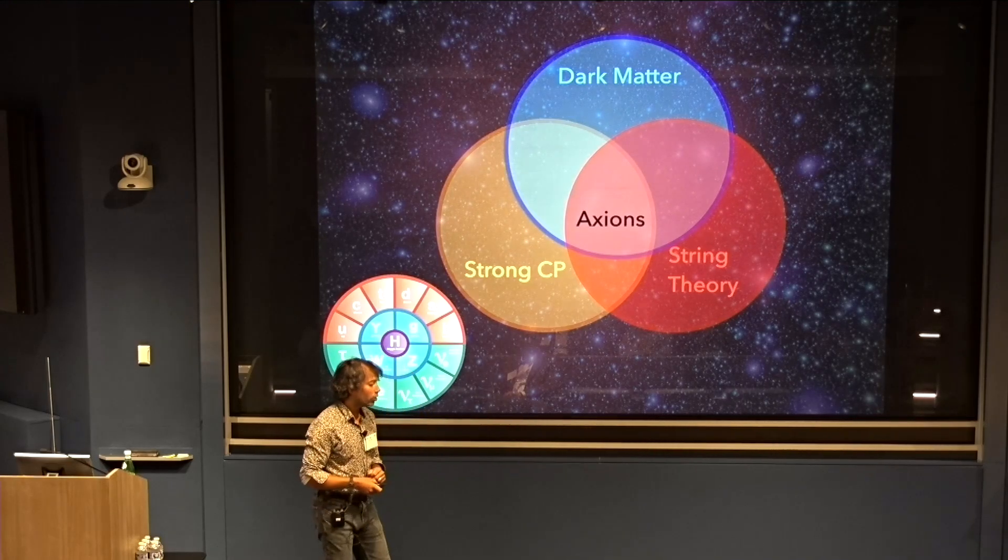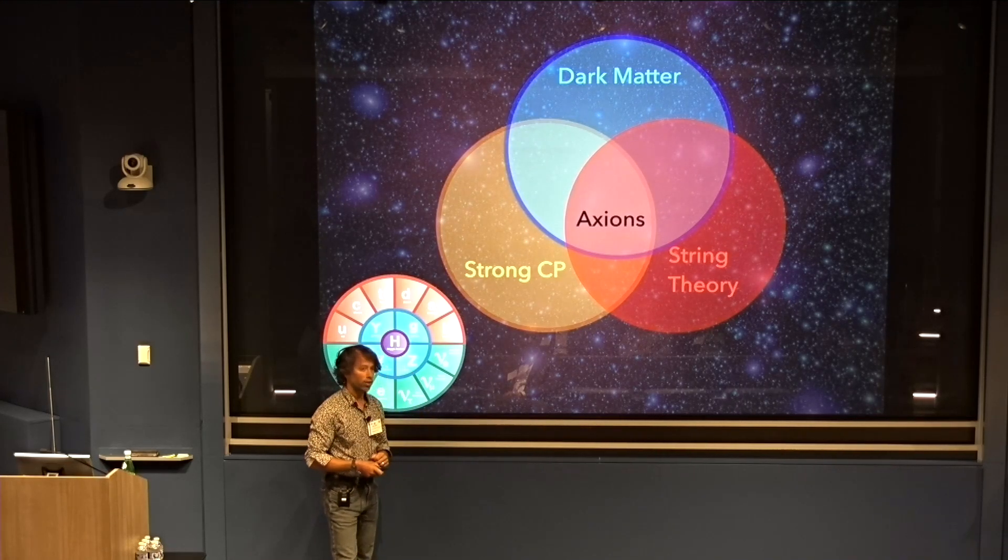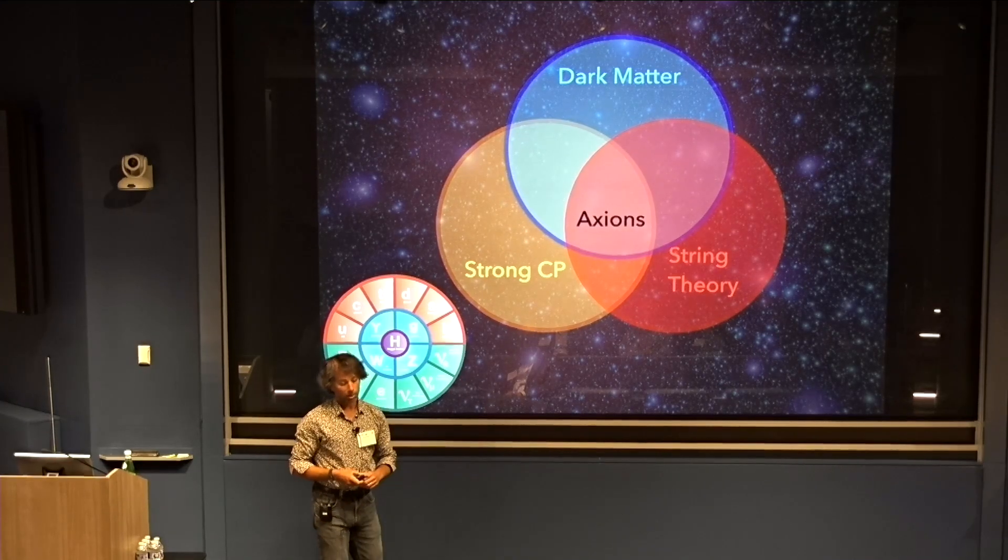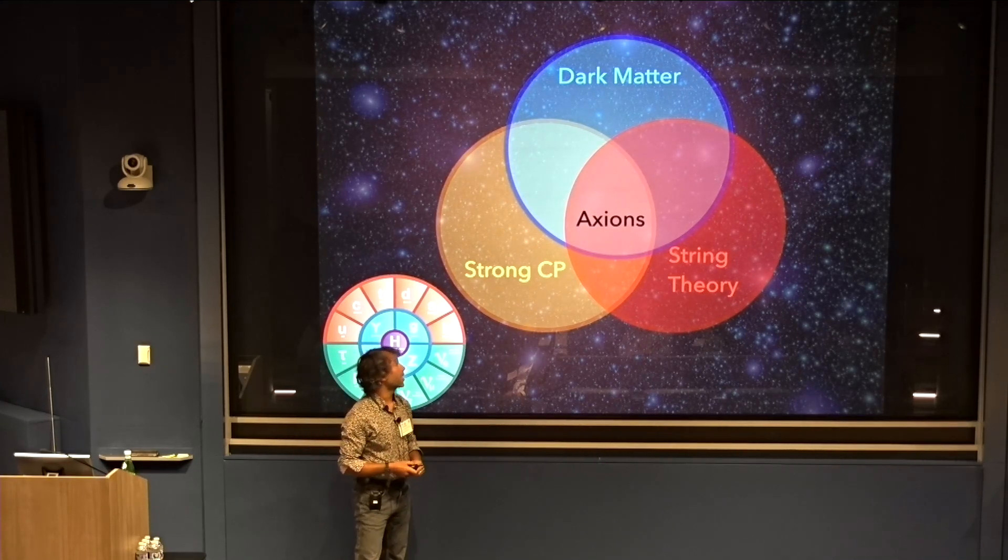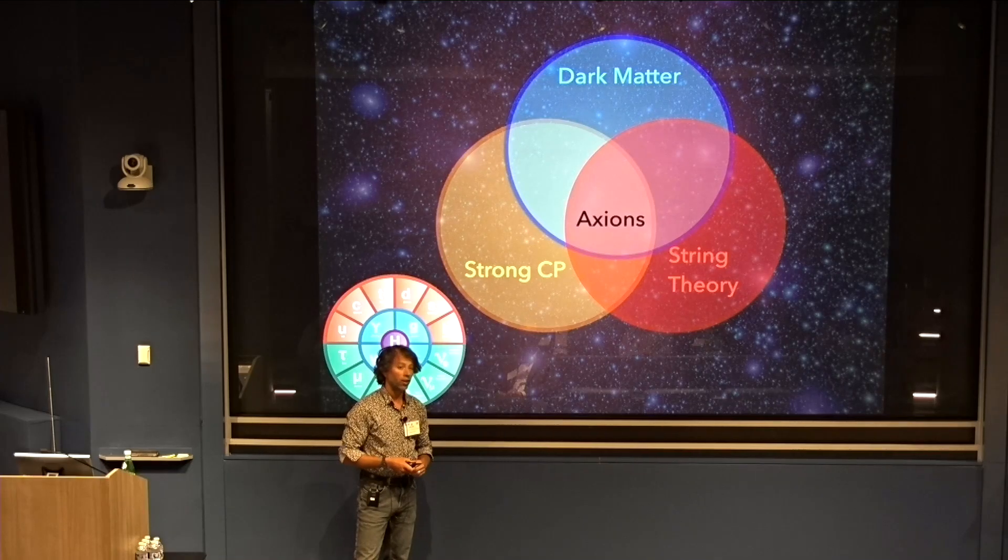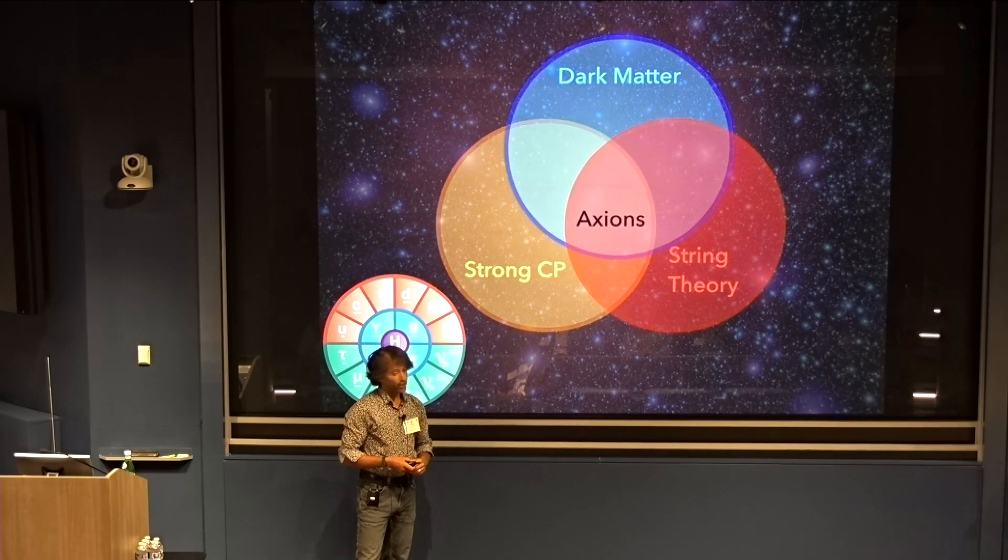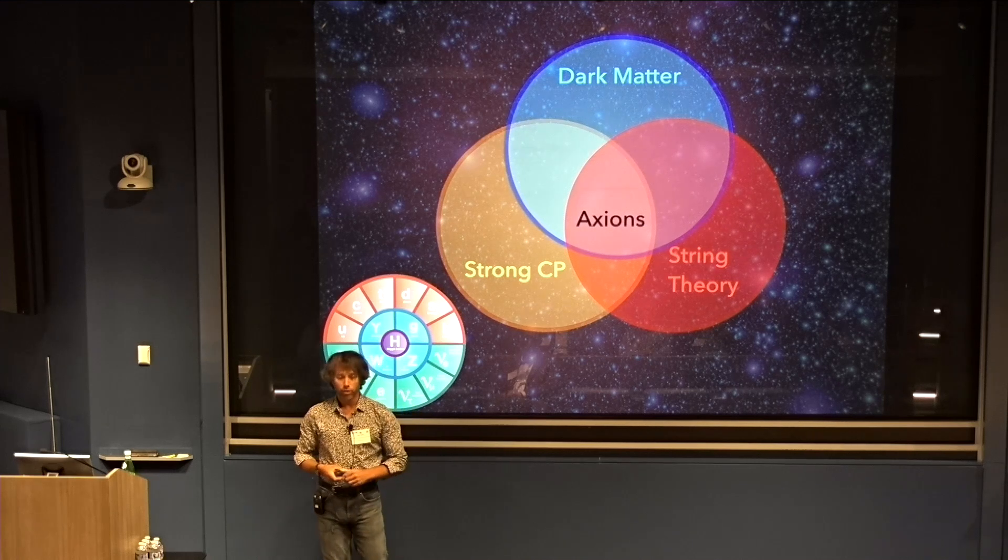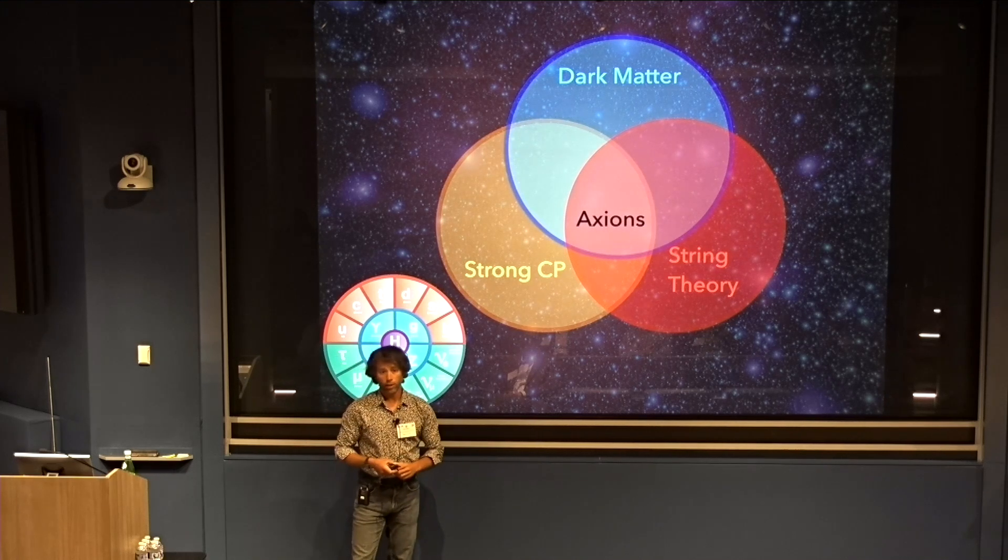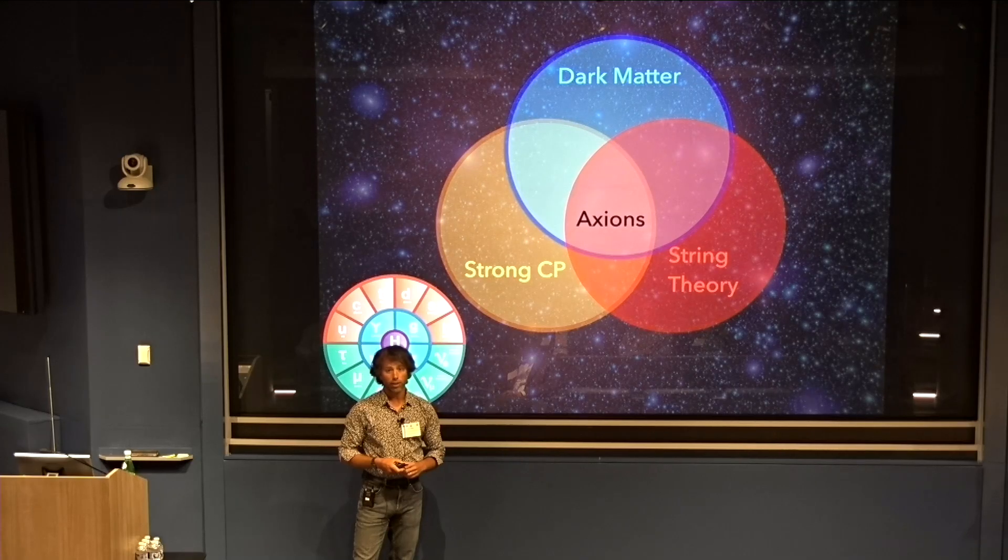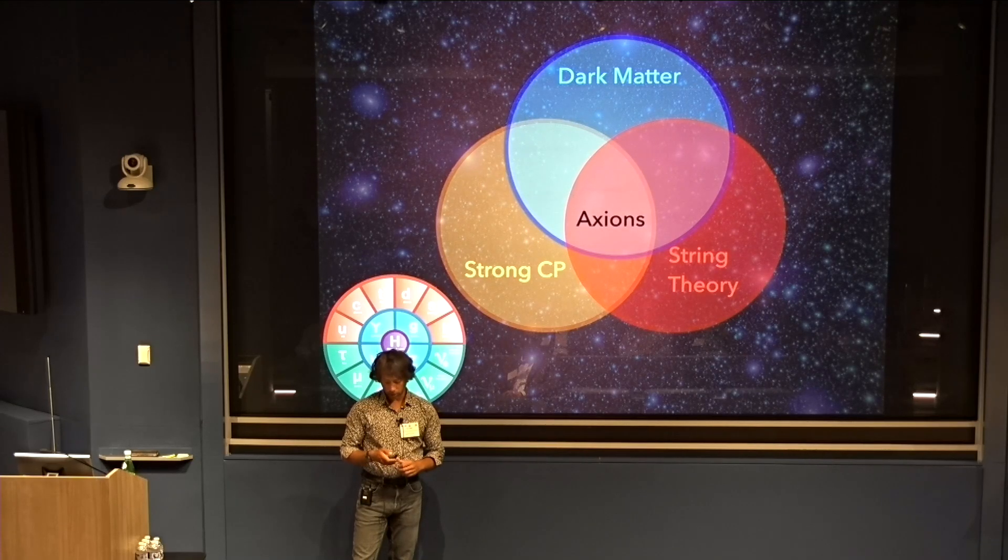The original motivation for the QCD axion comes from something called the strong CP problem. I'll explain what that problem is. But it was later realized axions could also make up the dark matter of the universe. And more recently, it's become understood that axions are a generic prediction of string theory and that they're deeply embedded within the framework of quantum gravity.